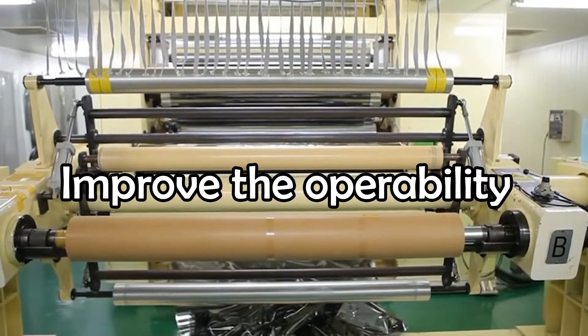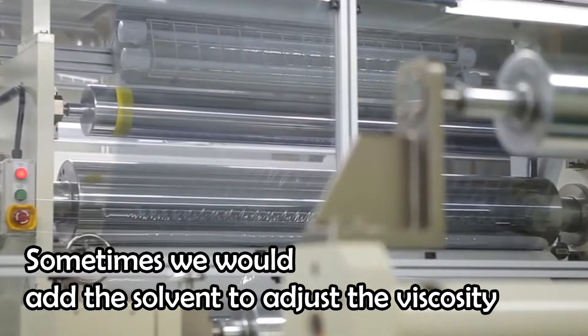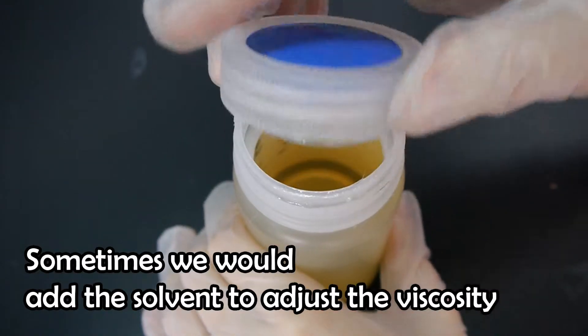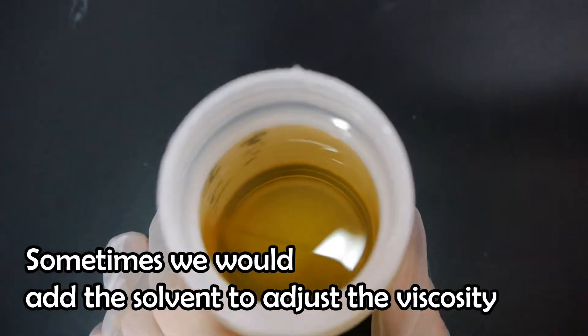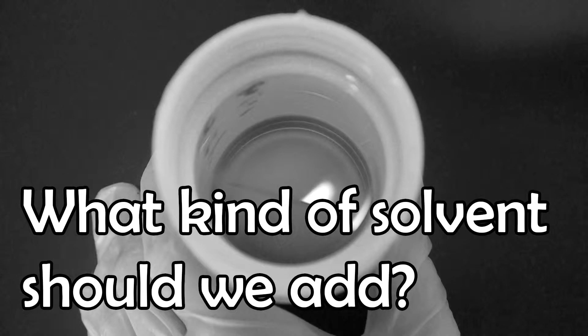In order to improve the operability, sometimes we would add the solvent to adjust the viscosity before the coating process of machine. However, what kind of solvent should we add?